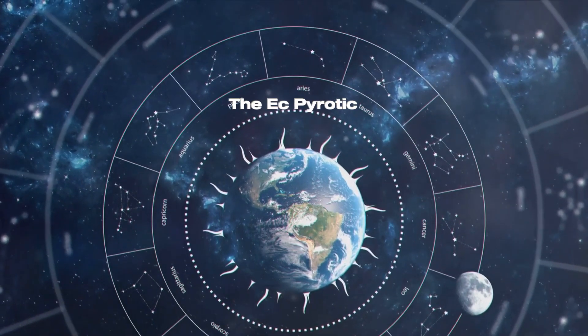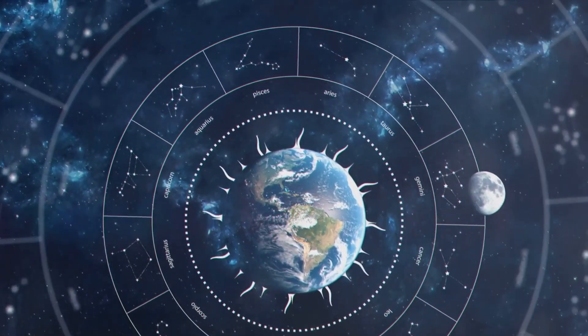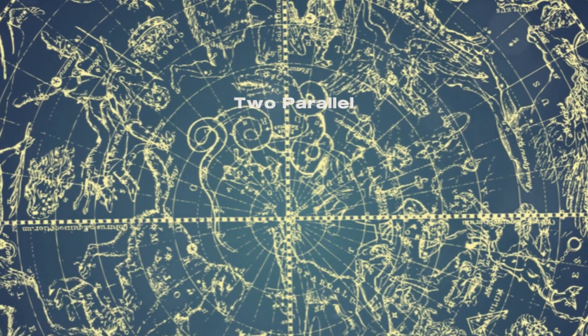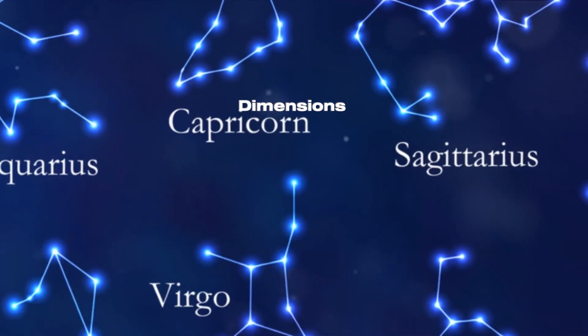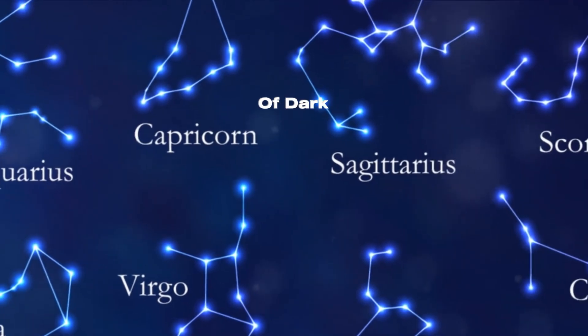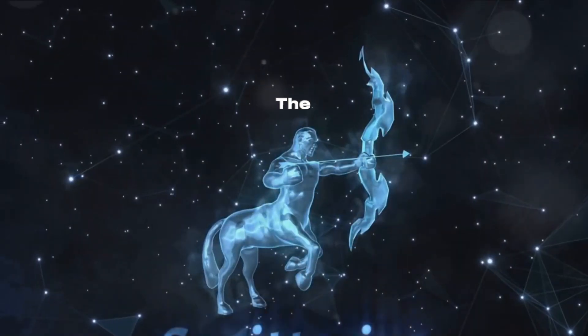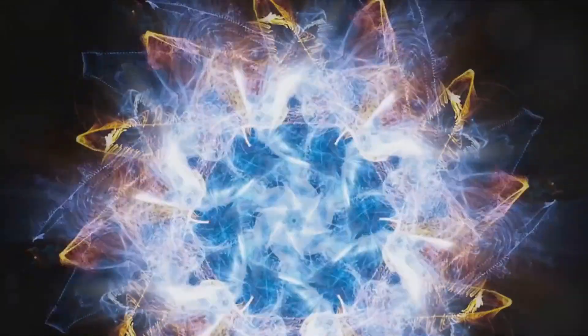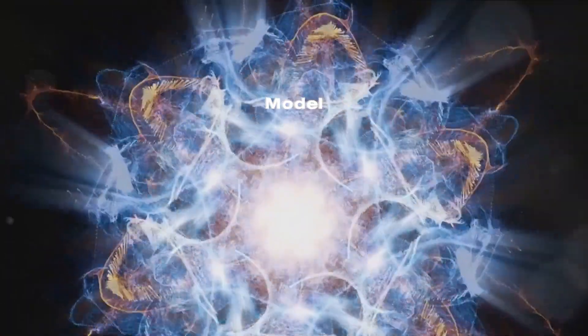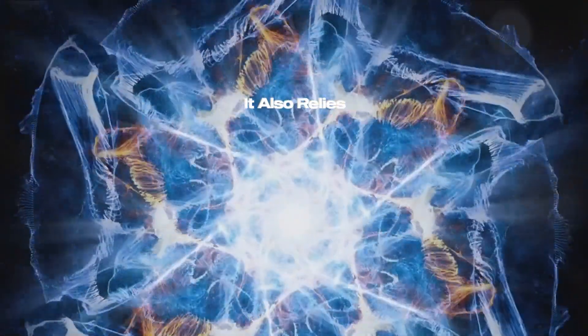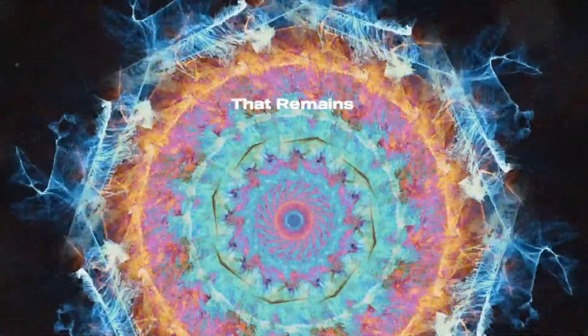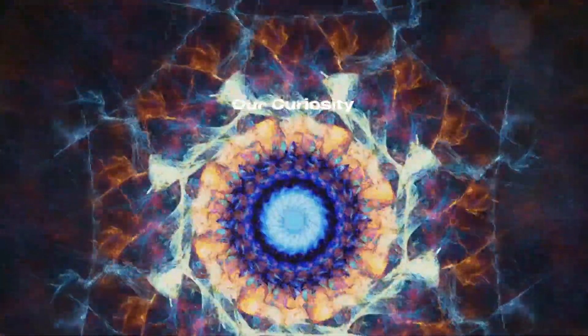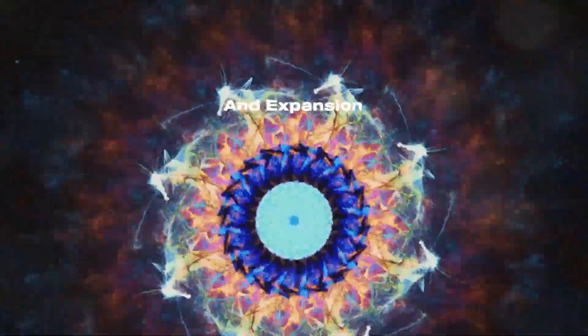On the other hand, the Ekpyrotic universe model proposes a startlingly different origin story. It suggests that our universe was born out of a colossal collision between two parallel membranes, or branes, in higher dimensions. This model, too, explains the existence of dark energy and dark matter, along with the cosmic microwave background radiation, the afterglow of the Big Bang. Much like the CCC model, the Ekpyrotic model is complex and challenging to test. It also relies on the existence of branes, a concept that remains purely theoretical at this point. Regardless, the model has fueled our curiosity and enriched our perspectives on the evolution and expansion of the universe.